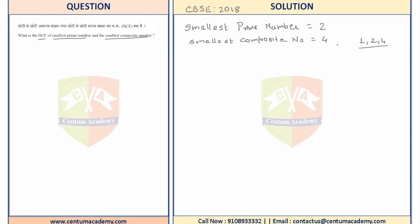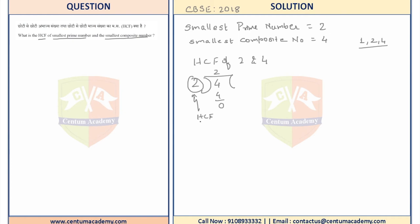4 has three factors: 1, 2, and 4 itself, making it the smallest composite number. Now let us find the HCF of 2 and 4 using Euclid's division method. 2 times 2 is 4, remainder 0, so the HCF of 2 and 4 is 2.